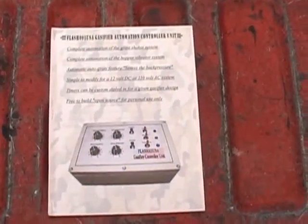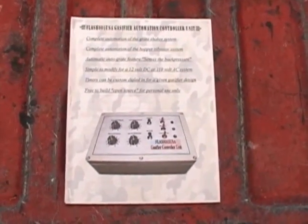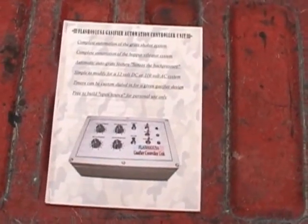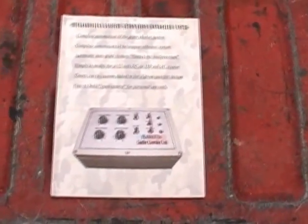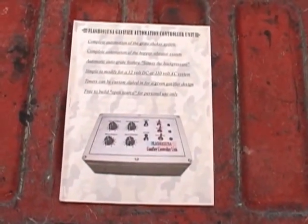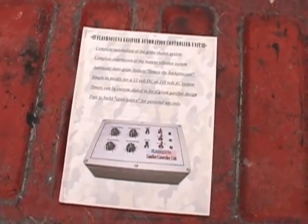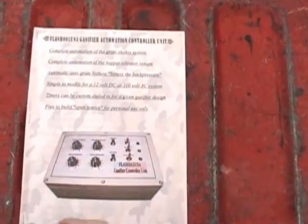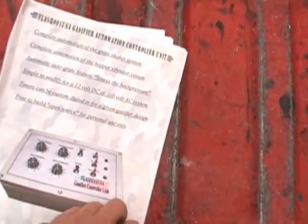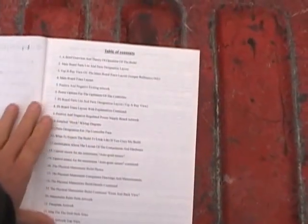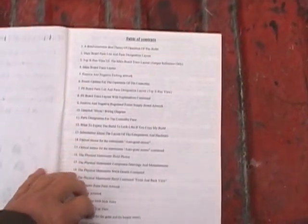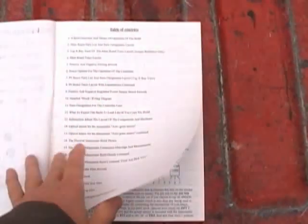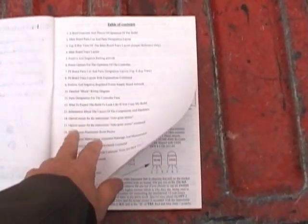I went ahead and printed off a copy just for myself, plus it's a good way to introduce this and let everybody know what to expect when they download the file. I set it up so you could print it off and staple it together like a manual. This is the cover page right here, and I actually did a table of contents — you can see everything listed. It's broken down so if you want to look at something in particular you can just go to that page.